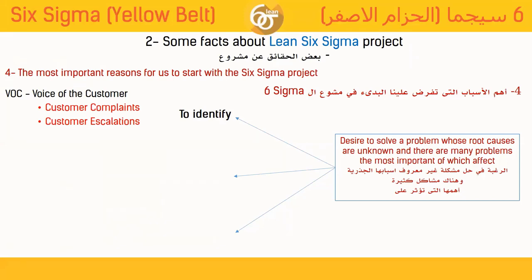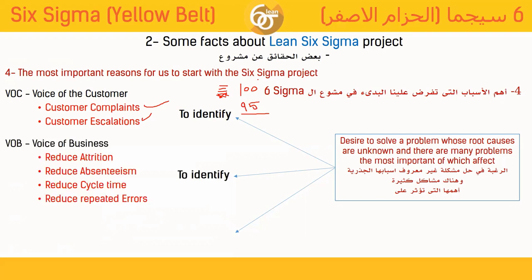There are two ways to collect the VOC. The first is through customer complaints — direct complaints received through your complaint system. The second is through customer escalation — meaning the number of customers you have is starting to decrease. For example, if you had 100 customers and now you have 95, that is an escalation signal requiring you to collect VOC data.